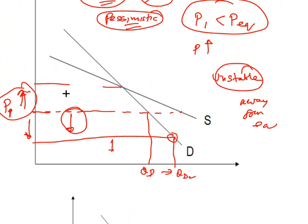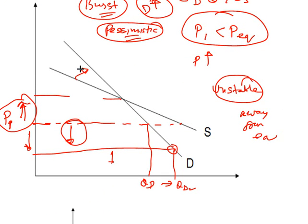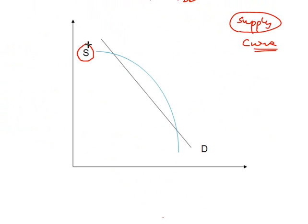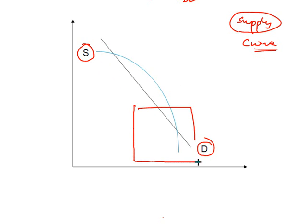Please note that in the case of unstable equilibrium, the supply curve must cut the demand curve from below. You can achieve both stable and unstable equilibrium if your supply is not a straight line but a curve. With a curved supply, at a certain area you will see the supply is cutting the demand from above.